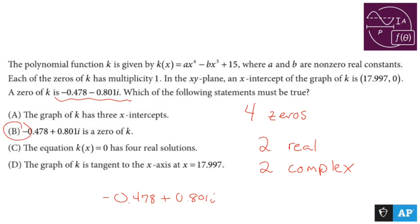The equation k(x) = 0 has four real solutions. Nope. And the graph of k is tangent to the x-axis at that guy right there, which, you know, we can't know. Now, unless it told us that this was a maximum or a minimum, but we're told that it's an x-intercept has nothing to do with this.